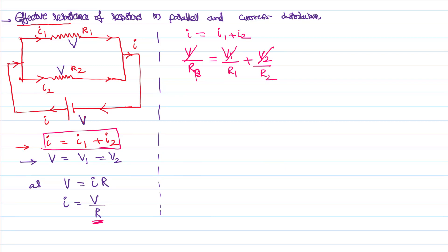These Vs are the same, they get cancelled. So 1 by R parallel equals 1 by R1 plus 1 by R2. This is the formula for the effective resistance when two resistors are connected in parallel. This can be simplified. That implies R parallel equals R1 R2 by R1 plus R2.